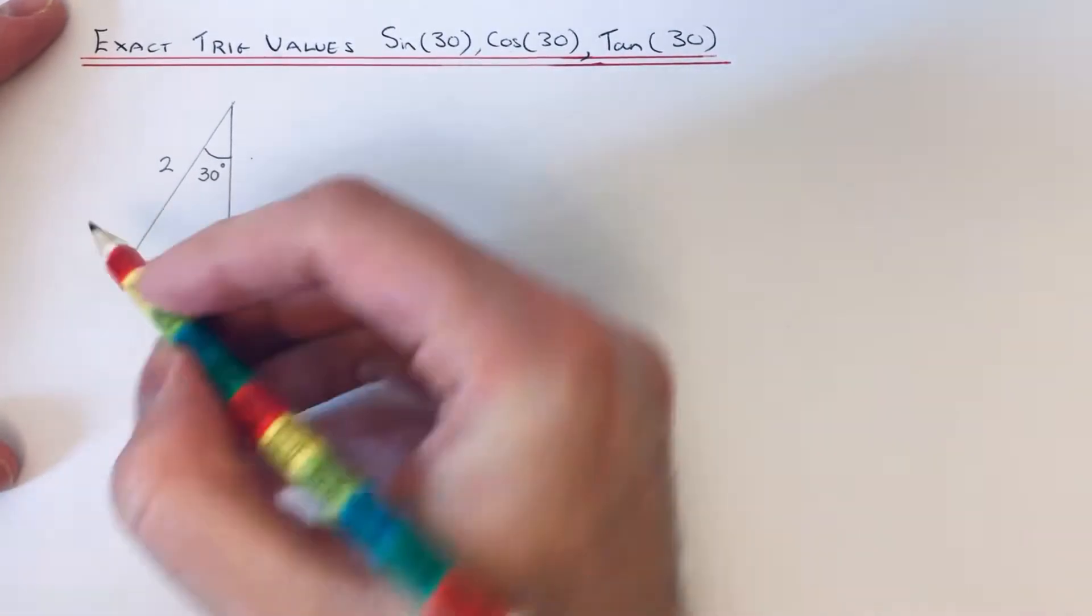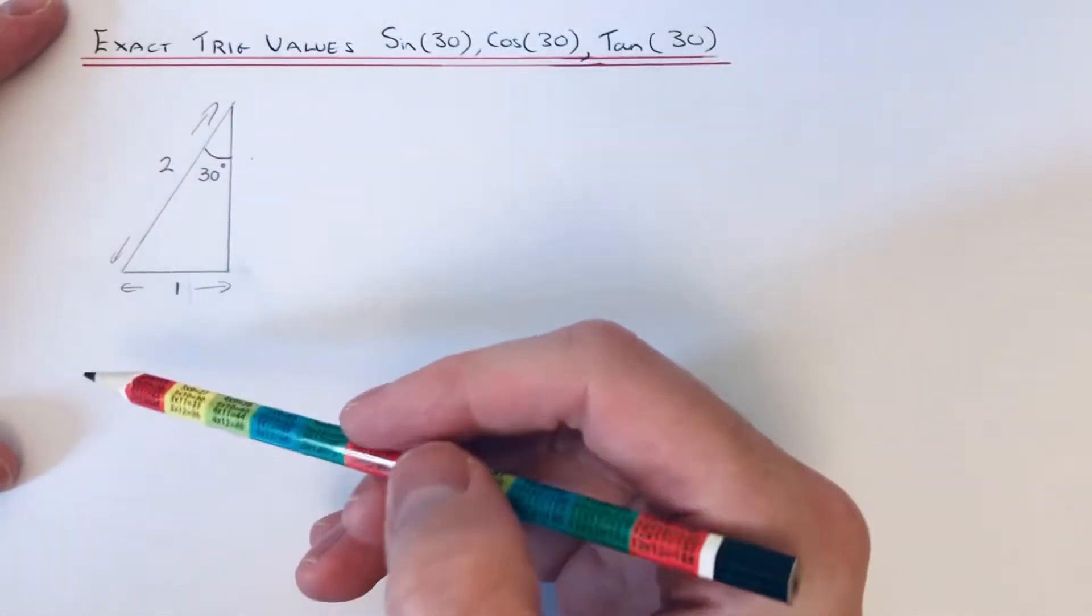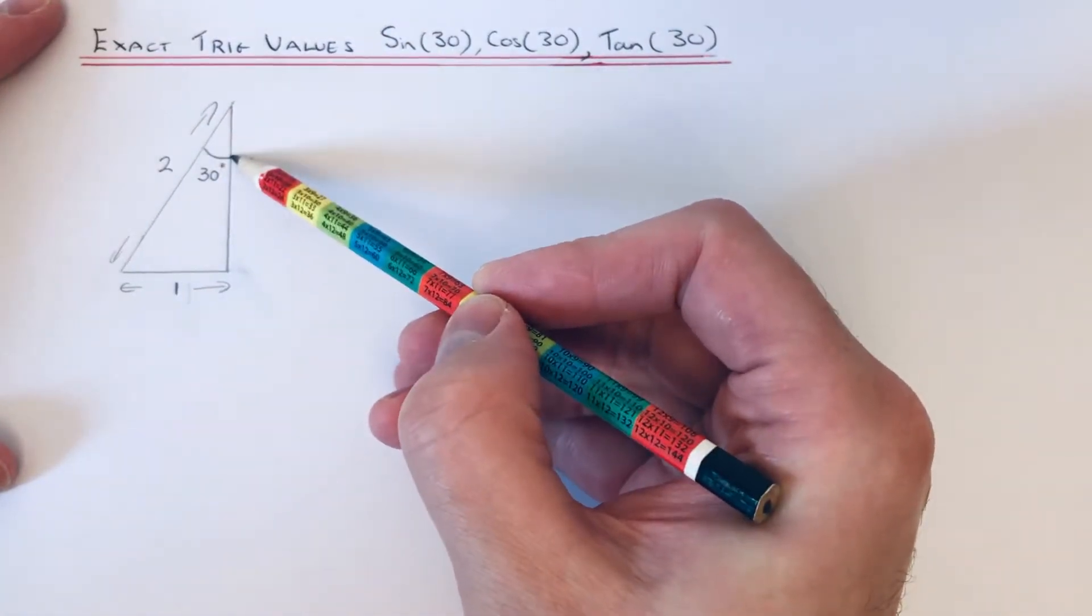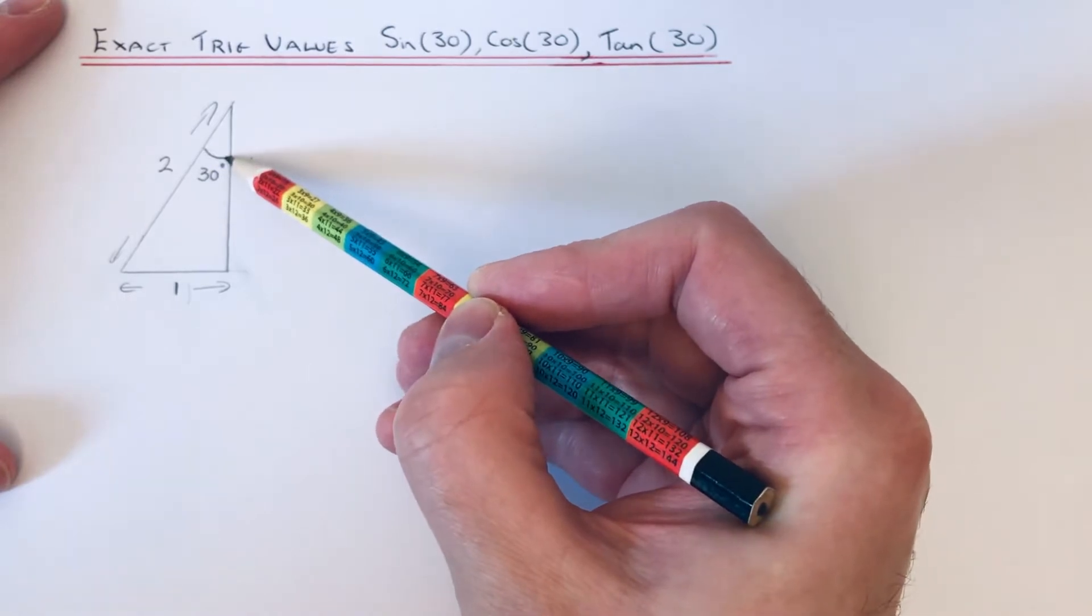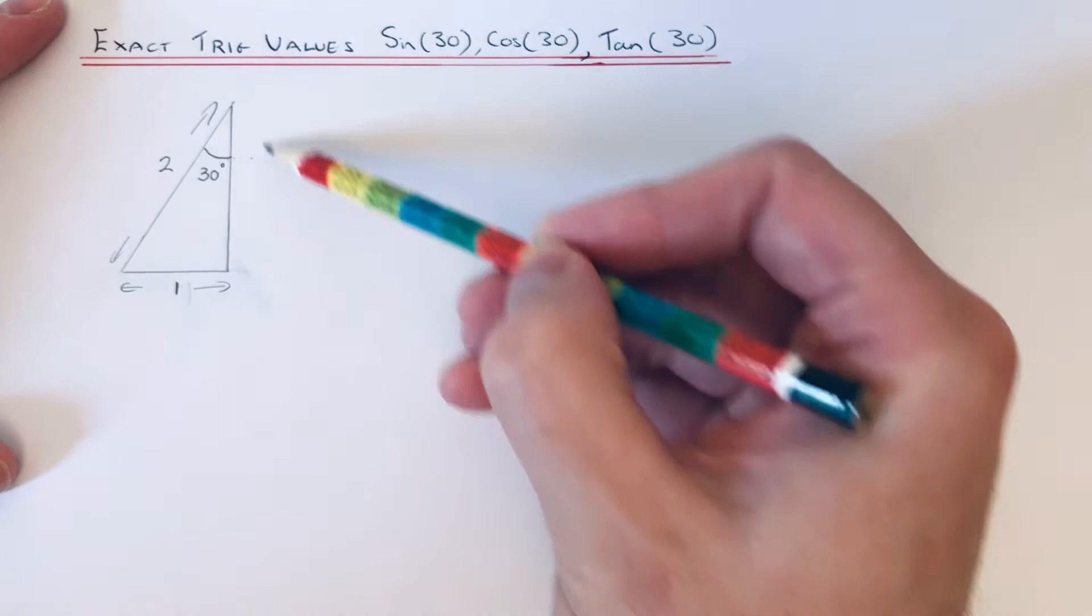So this will give you a 30 degree angle inside the triangle. The reason for this is because it's half of an equilateral triangle.